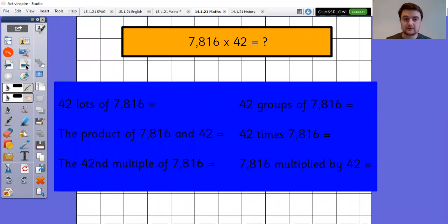So we're going to look at our example question of 7,816 multiplied by 42. There's lots of different ways that that could be said. You might see that as 42 lots of 7,816, the product of 7,816 and 42, the 42nd multiple of 7,816, 42 groups of 7,816, 42 times 7,816 or 7,816 multiplied by 42. And because multiplication is commutative, you might see it either way around. So you might see 7,816 groups of 42 instead.